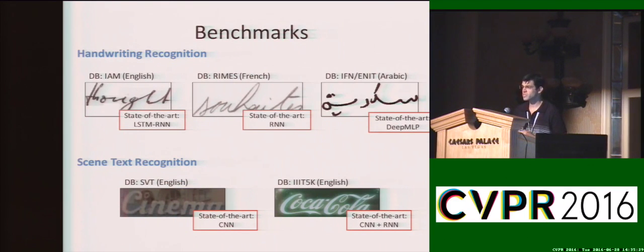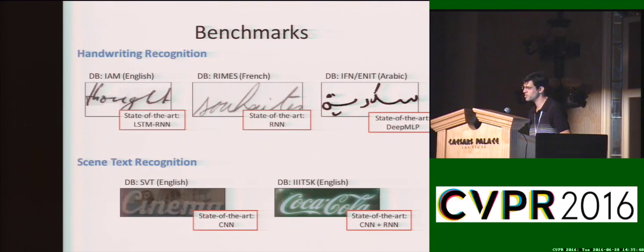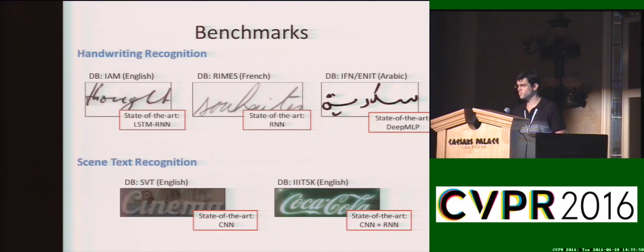Obviously, we're not the first to use deep learning for text recognition. If you take a look at benchmarks of handwriting recognition and scene text recognition, one can see that the state-of-the-art on all of them is achieved by some type of deep learning method, be it LSTM RNNs, DeepMLP, or CNNs. What's interesting to note is that almost every benchmark uses a different method to achieve state-of-the-art.